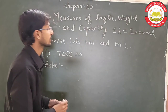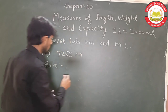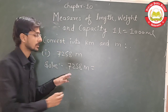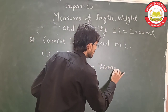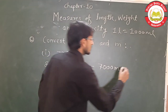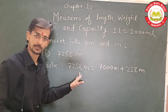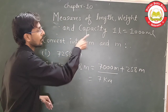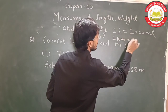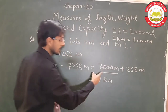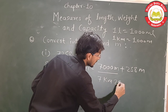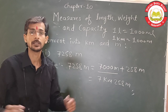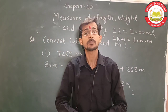Now the topic is: convert into kilometers and meters. The question is 7200 meters. We distribute: 7000 m plus 200 m. Since 1 km equals 1000 m, 7000 m equals 7 km. The remaining 200 m stays. So the answer is 7 km 200 m. That is how you solve these kinds of questions — keep practicing. Thank you.